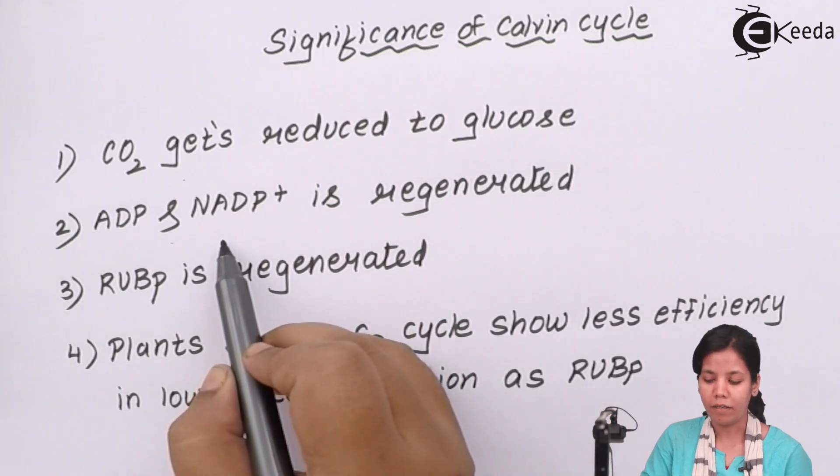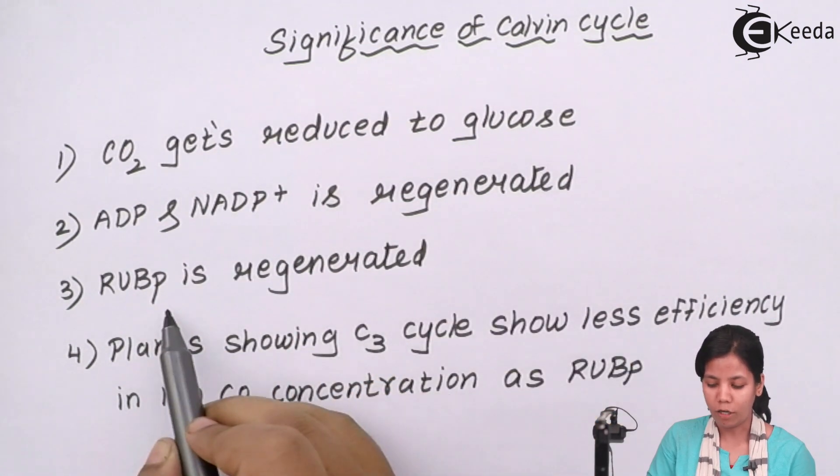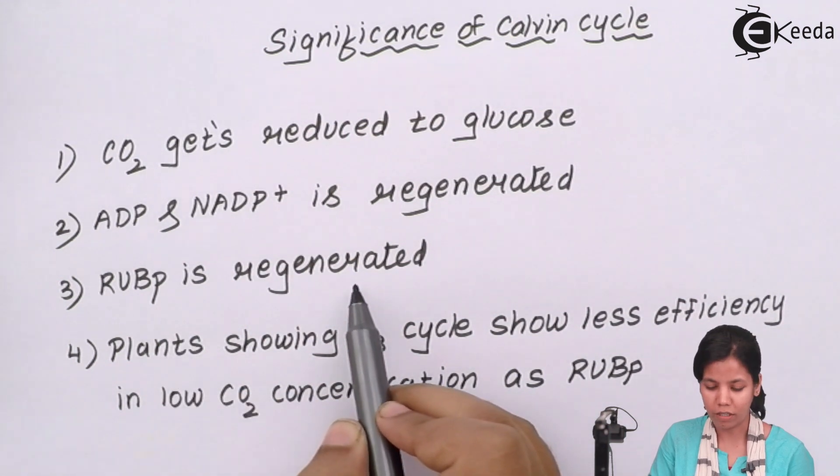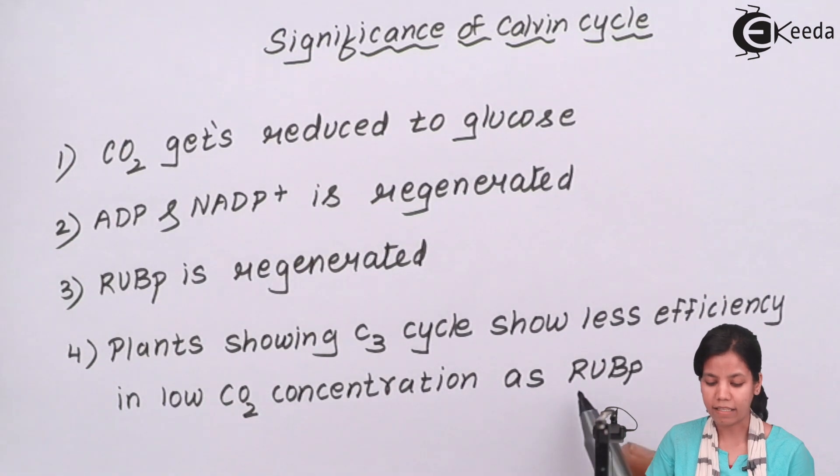ATP and NADPH2, precisely NADPH2, is regenerated or formed. RUBP, i.e., ribulose biphosphate carboxylase, the first carbon dioxide acceptor, is regenerated. Plants showing C3 cycle show less efficiency in low CO2 concentration as RUBP works differently.